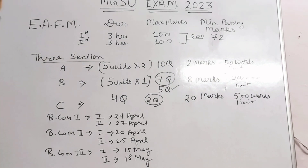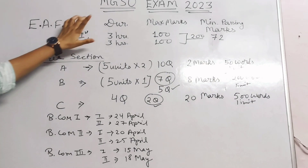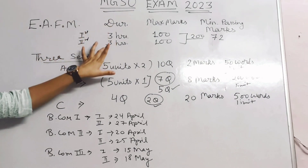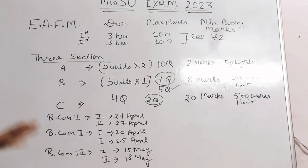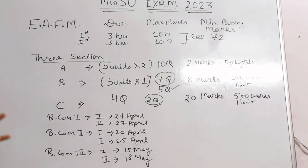Now, the time duration for the EFM paper is 3 hours. Paper 1st and Paper 2nd have maximum marks of 100 each, meaning 200 total marks. The minimum passing marks apply accordingly.